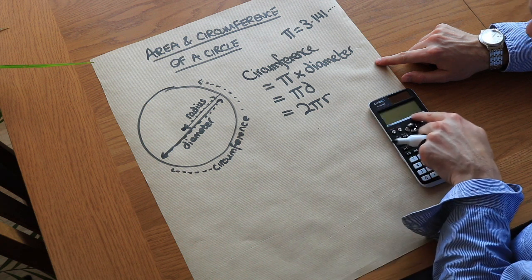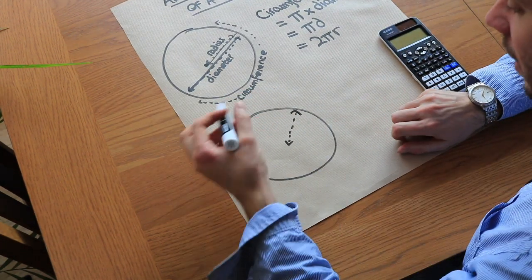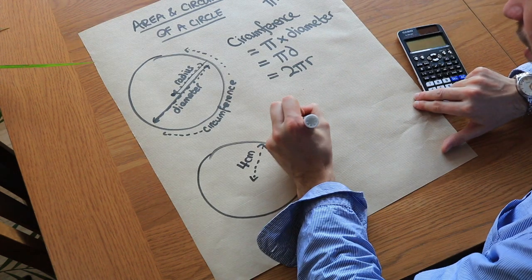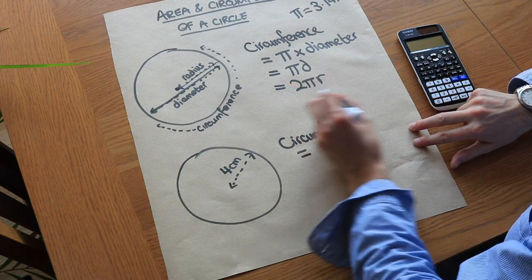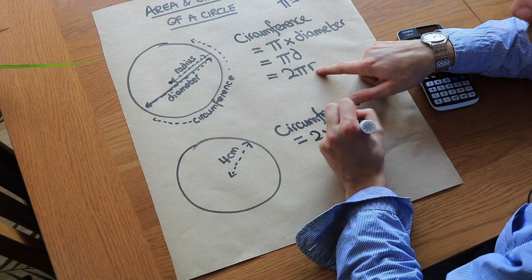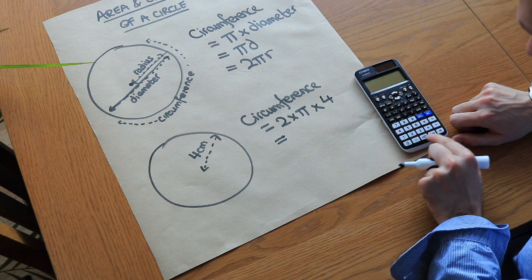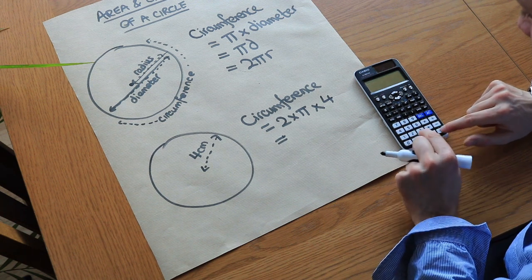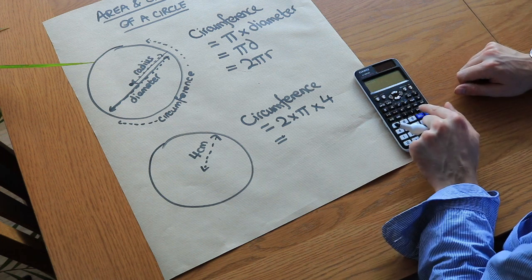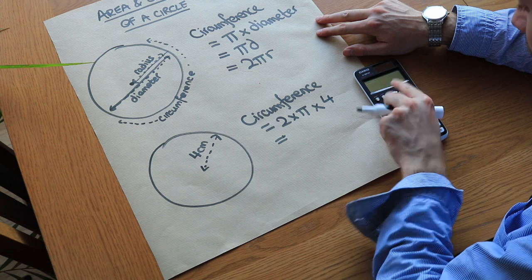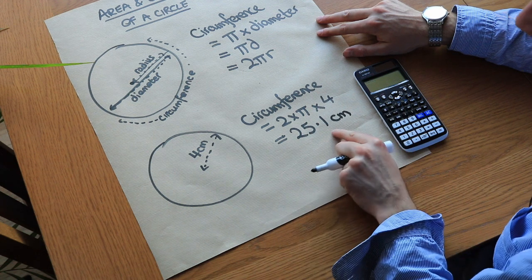So it's 2 times pi — where pi is this special value of 3.14 etc. — times the radius of the circle. If we had a circle of radius 4 centimeters, the circumference would be 2 times π times 4. On the calculator, 2 times pi times 4 simplifies to 8π, but pressing the SD key converts it to a decimal: the circumference is 25.1 centimeters, rounded to one decimal place.